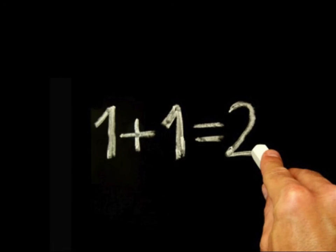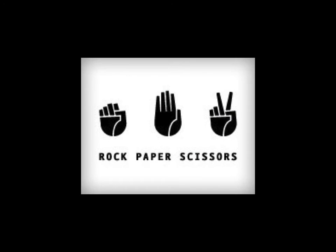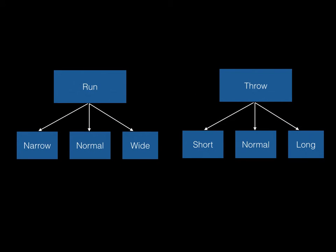We're going to start off very simply and then build on complexity as time goes by. What is more simple than rock, paper, scissors? So think of rock, paper, scissors — American football — and you get run, throw, kick. We do add another layer, so when you run or throw, you can either do it safe, normal, or risky, just to add a little bit of complexity.